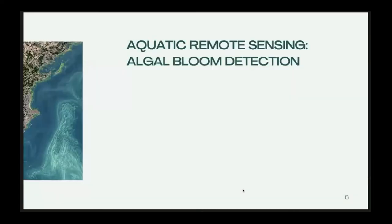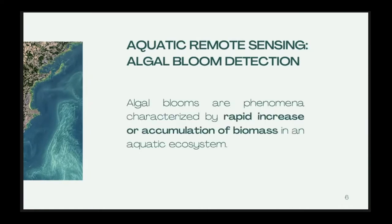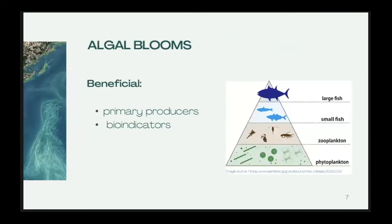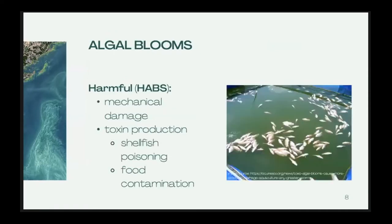One of the applications I deem very crucial to coastal communities and countries with vast coastlines is aquatic remote sensing, particularly algal bloom detection. Algal blooms are phenomena characterized by rapid or uncontrolled accumulation of biomass in an aquatic ecosystem. These events can be beneficial when they positively contribute as the base of the marine food chain as primary producers, or serve as environmental bio-indicators. However, blooms that produce toxic effects — mechanically blocking the gills of fish or producing toxins — are referred to as HABs, or harmful algal blooms.